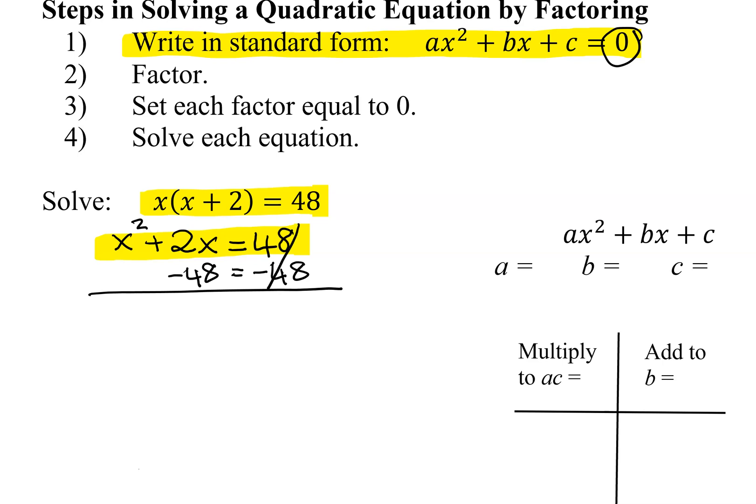That will give me my 0 on the right-hand side, and I'm going to get x squared plus 2x minus 48 equals 0. So now is it in standard form? Yes. So now I'm going to have to factor the left-hand side.